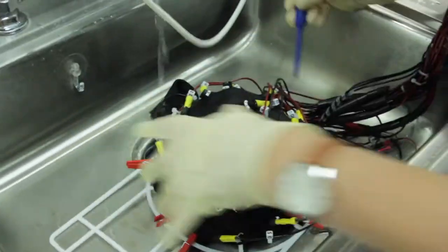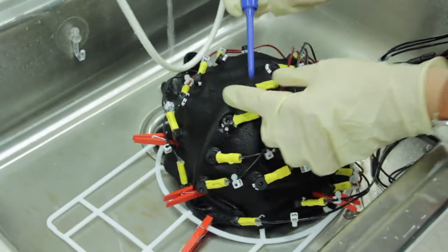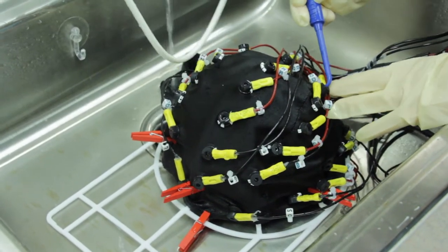Flip the cap over and water jet the outside of the electrodes. Again, make sure you go row by row to ensure you don't miss an electrode.